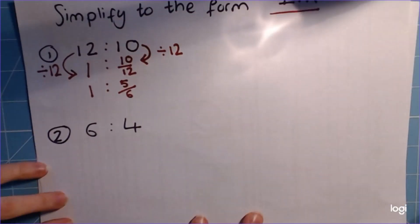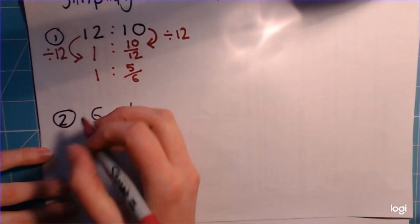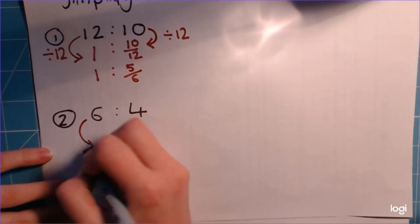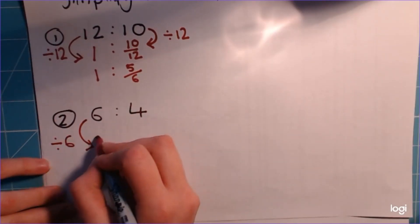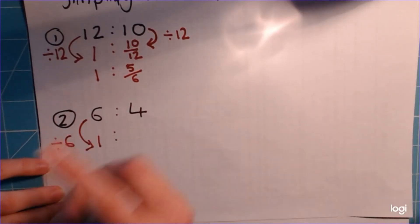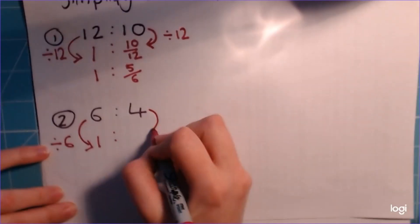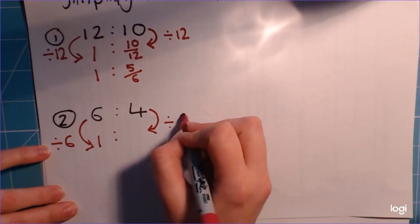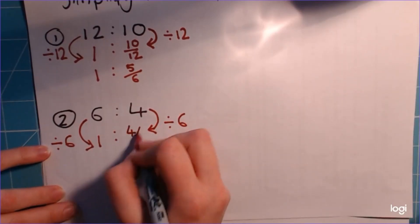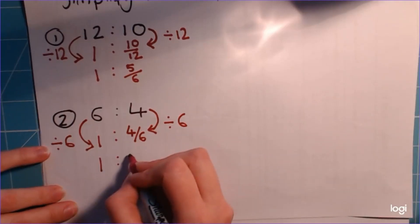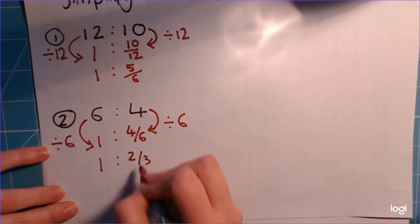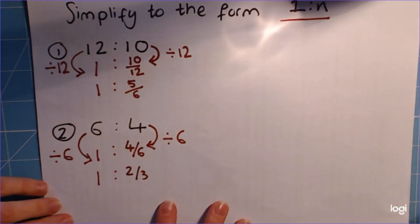So we're going to do the same thing for this one. We're trying to turn this number into a 1. So we're going to divide 6 by 6, which gives 1. And 4, we have to match them up, so it has to be divided by 6 as well, which gives 4/6. And again, we can simplify that fraction to 2/3.